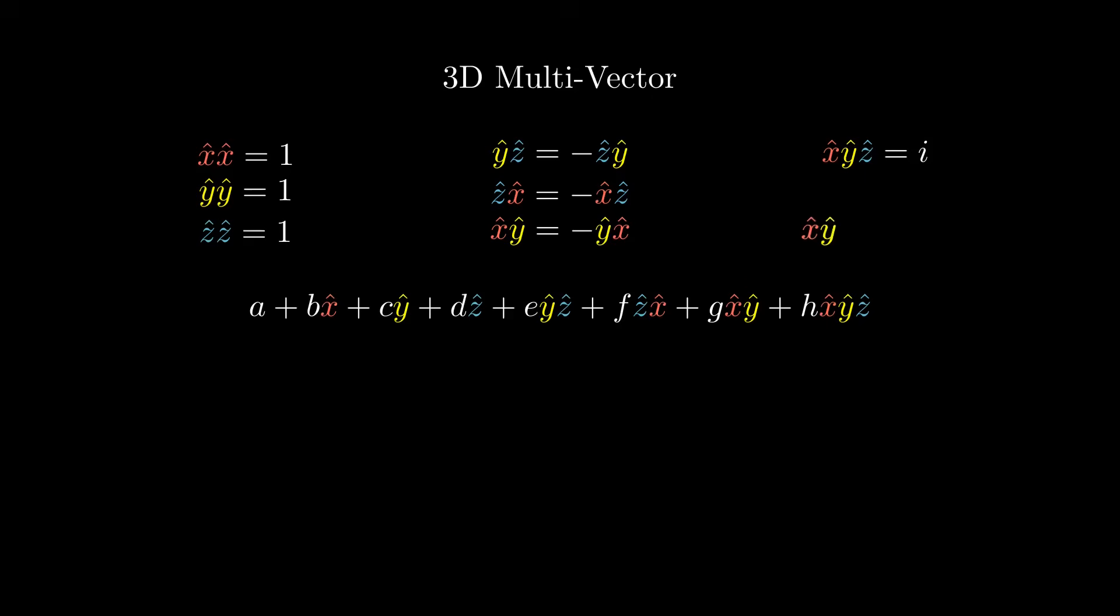With this relationship, we can now take a pair of basis vectors and write them as the remaining basis vector times i.